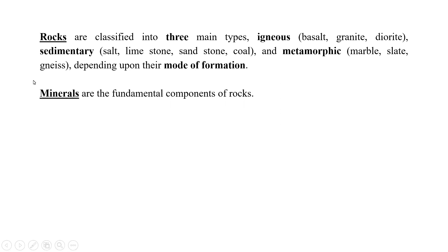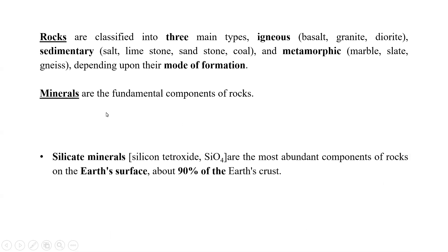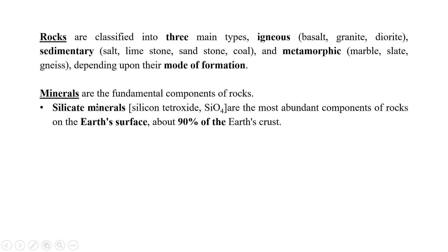Whenever we talk about minerals, minerals are the fundamental components of the rocks — they are the constituents of the rocks. Silicate minerals, also called silicon tetraoxide, are the most abundant components of the rocks on the earth's surface, constituting about 90 percent of the earth's crust. So the major amount on the earth is silicate minerals in the form of silicon tetraoxide.